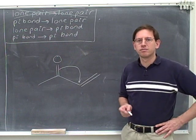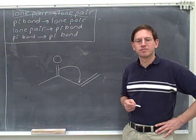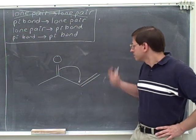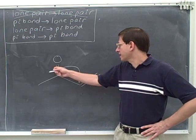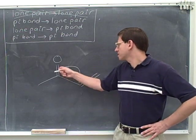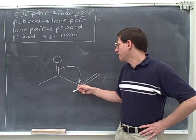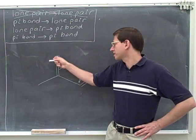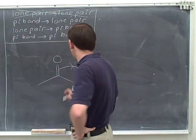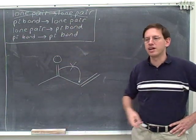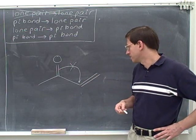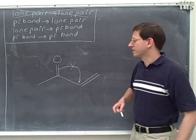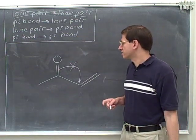Now how about this arrow — does that satisfy as close as possible? No. Because again, we're taking a pi bond and making it into a lone pair, but now we're putting this lone pair all the way on this distant carbon. That's not as close as we can get to the original pi bond. It would be closer to put the lone pair on this carbon or on this oxygen. So this is not a good electron pushing arrow — not one you'd want to draw in drawing resonance structures.